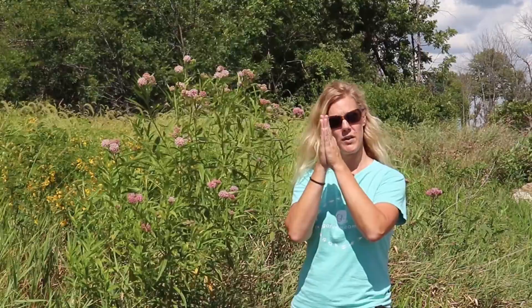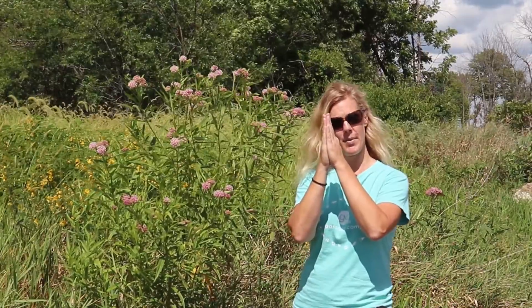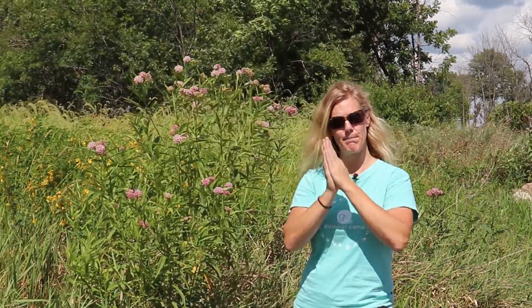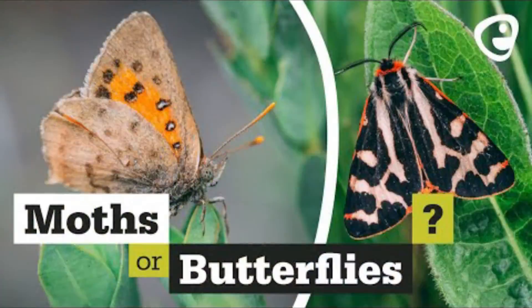Butterflies, when they land and are at rest, will fold their wings up vertically. Moths, when they are at rest, have their wings folded down and out.